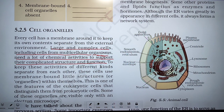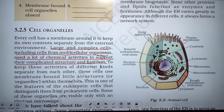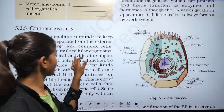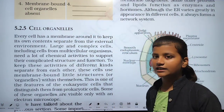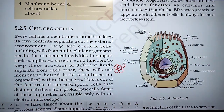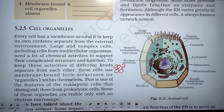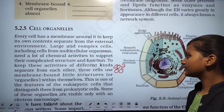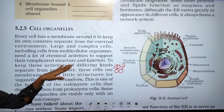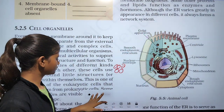In a multicellular organism, which is made up of millions of cells, there is a lot of chemical activity needed to support the complex and complicated structure and function. To keep these activities of different kinds separate from each other, cells have specialized structures.